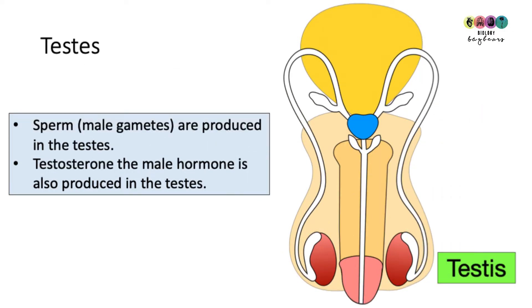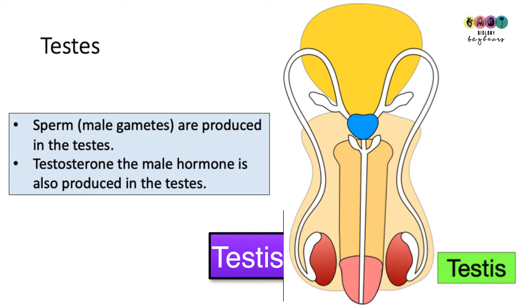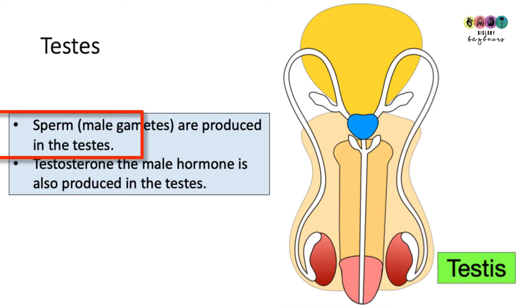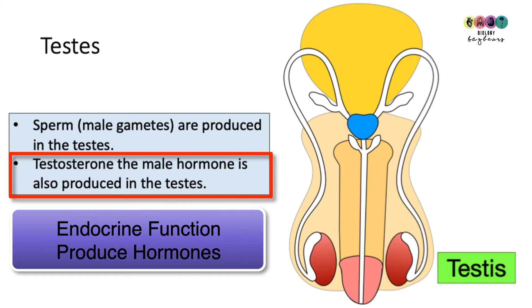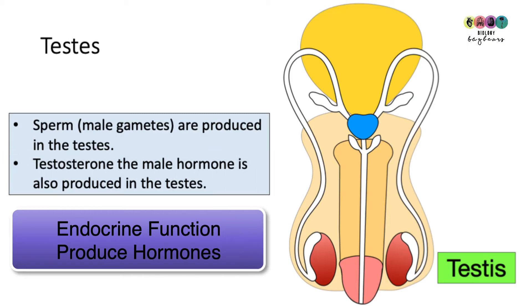We're going to examine the key features of the male reproductive system and we'll begin with the testes. There are two testes, and this is where the male gamete, the sperm, are produced. It's also where testosterone, the male hormone, is produced, so the testes have an endocrine function also.